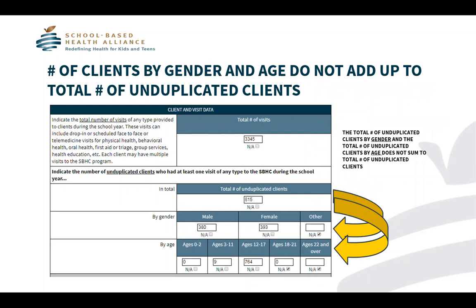The second common error we observe is that the number of clients by gender and age do not add up to the total number of unduplicated clients. In this example, if you add the number of male clients and female clients — 380 and 393 — it equals 773. This does not equal 815, which is reported as the total number of unduplicated clients.